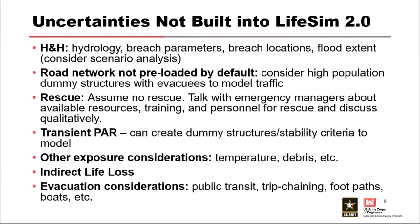What's not built into LifeSim in terms of uncertainty? Hydrology and hydraulics will be fixed — it's always going to be, say, 2 feet of depth at a particular structure for a given iteration. You'd have to bring in another depth grid to account for H&H uncertainty. There's also omitted variables: no rescue explicitly modeled, no transient population in the NSI. You can back into some of this, but there are things simply not in the model at all.